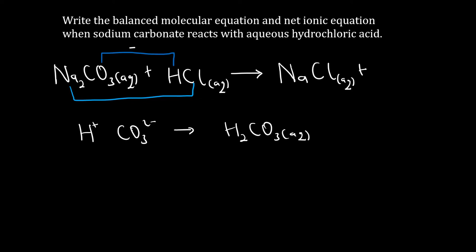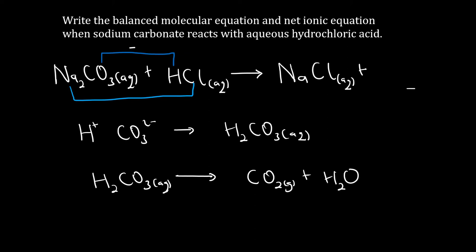However, carbonic acid is quite unstable and tends to break down to form carbon dioxide and water. So as the second product in our equation, we put carbon dioxide gas plus water instead of carbonic acid.